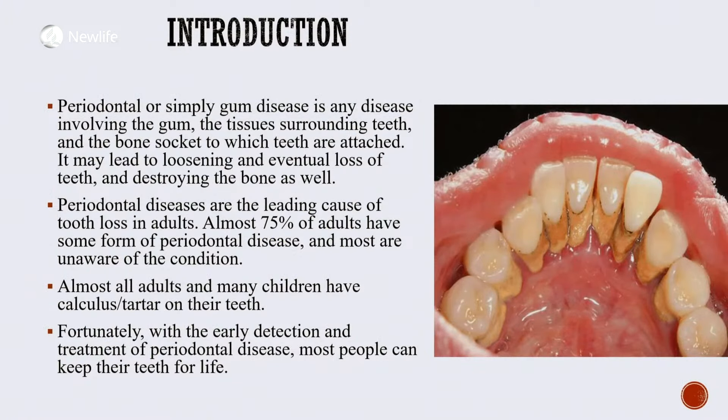Periodontal diseases are the leading cause of tooth loss in adults, and almost 75% of adults have some form of periodontal disease. Most people are unaware that they have the condition. Almost all adults and many children have calculus, also known as tartar on their teeth — a classical example of which is hardening of the plaque around your teeth, which cannot be removed just with brushing. It has to be removed using machines by your dentist.